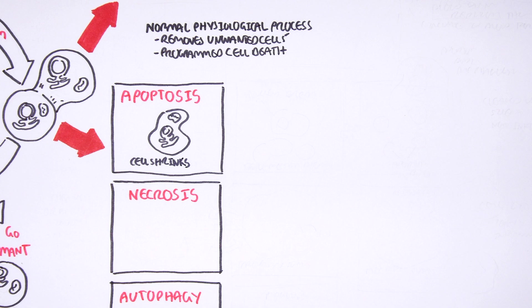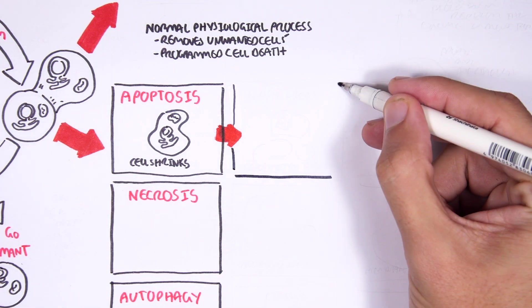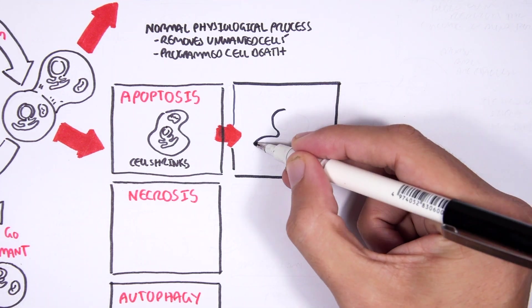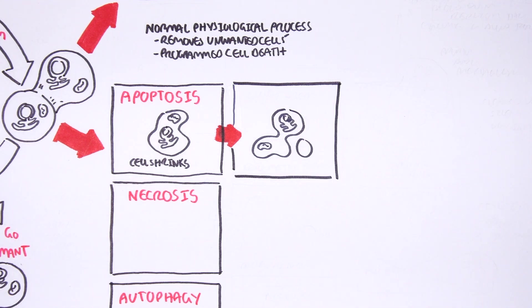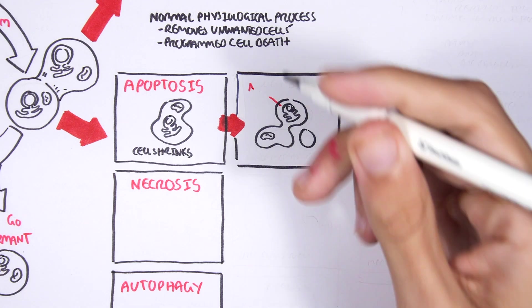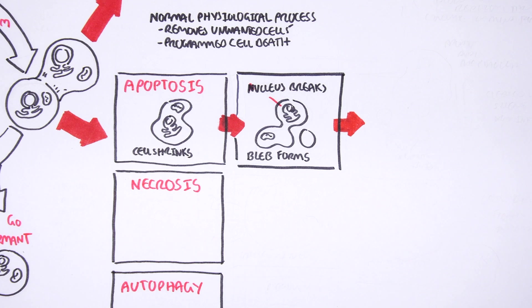In apoptosis, the cell receives a death signal either from the outside or from within the cell. This death signal causes the breakdown of the cell's DNA and the cytoskeleton and proteins, which causes the cell to shrink. As the cell shrinks, blebs will form. These are like droplets of water separating.